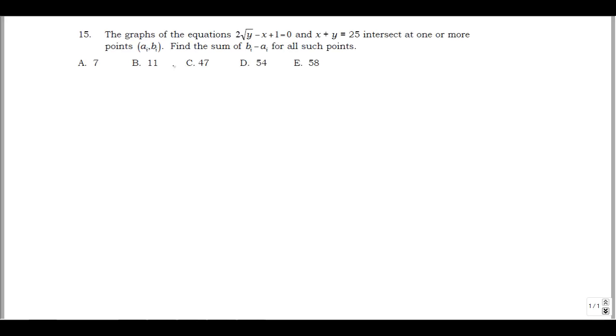This is problem 15 from the Spring 2015 AMATIC Student Math Weeks contest. Problem states the graphs of the equations 2√y - x + 1 = 0 and x + y = 25 intersect at one or more points (a_i, b_i). Find the sum of b_i - a_i for all such points.